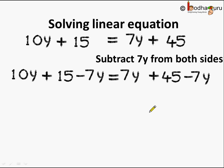Solving it further. What do we get? 10y minus 7y is equal to 3y plus 15. We bring it down. Here on the RHS 7y minus 7y is equal to 0 and we are left with plus 45 or simply 45 we can say.